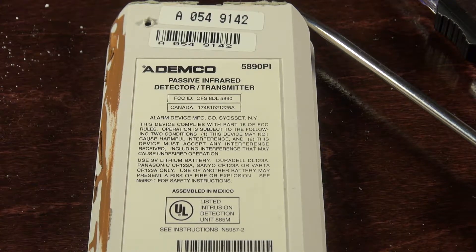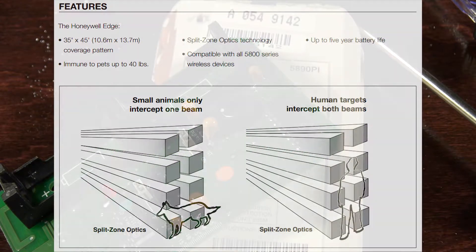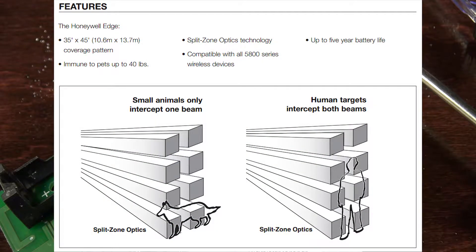Oh look, I think we can get a data sheet on it. What do you know? So we can get a data sheet on it and know that it's got split zone optic technology, whatever that is. Five year battery life, that's pretty impressive.